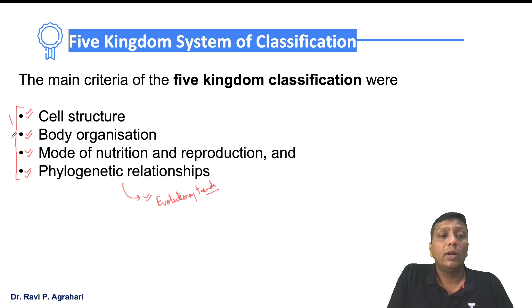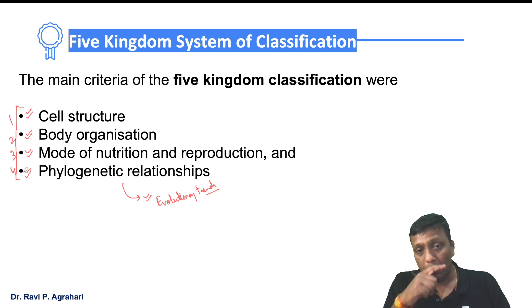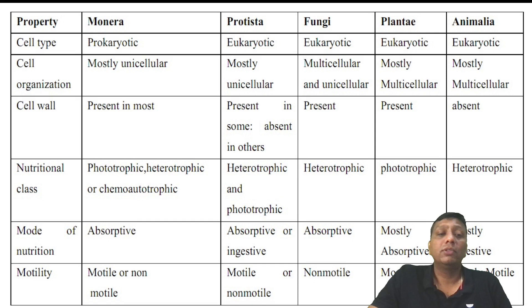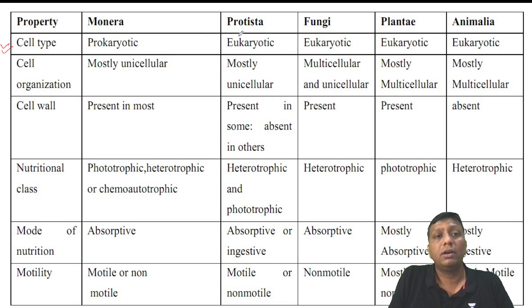These are the basics of Whittaker's five kingdom system of classification — all four criteria are correct and important for UPSC civil service examination. You can see all five kingdoms on the screen: Monera, Protista, Fungi, Plantae, and Animalia.